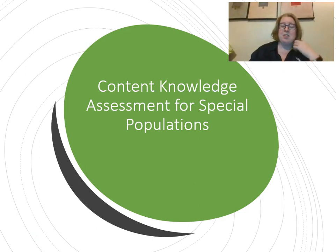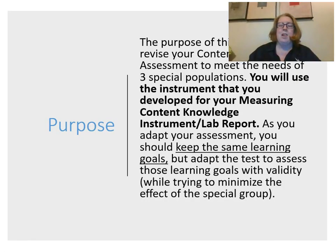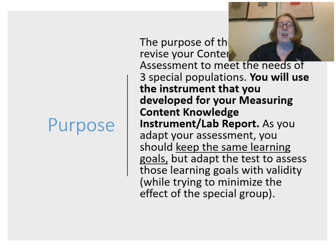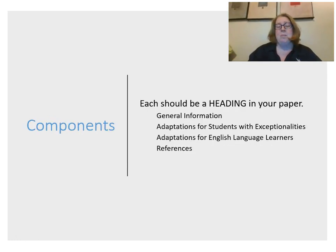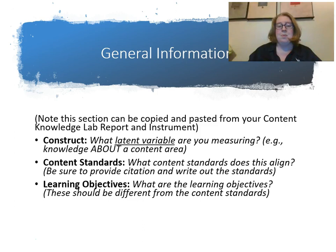Now let's talk about the content knowledge assessment that's due this week. You're going to take the content knowledge assessment you developed last week and adapt it for two different groups. You're keeping the same learning goals, but I want you to adapt the test to assess these learning goals with validity while trying to minimize the effect of the subgroup. You're going to have three headings: general information, students with exceptionalities, and English language learners. For general information, you can copy and paste from your original report — your construct, the standards, and your learning objectives — just to remind me what you were doing.